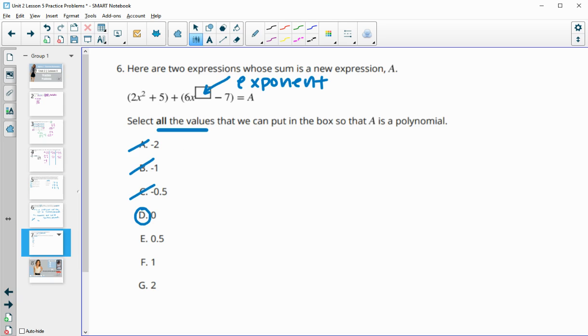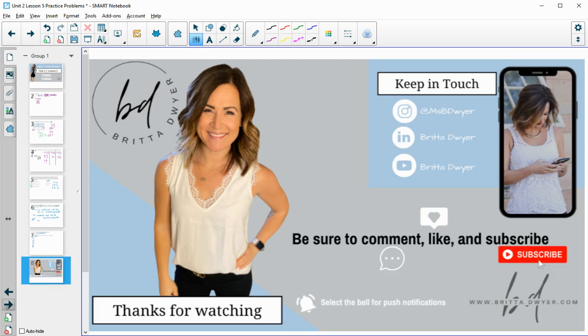And I mean I guess 0 would cancel it out but that's still a polynomial because then it would be 6. So 0 is not negative. It cannot be 0.5 because it can't be a fraction or a decimal. It can be 1 and it can be 2.